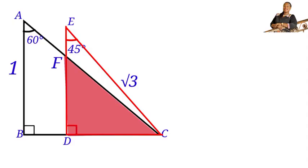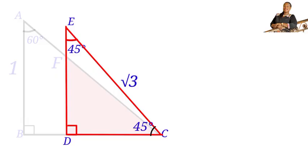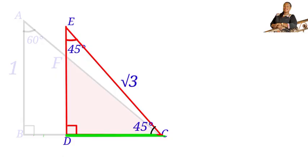Now let us solve. Focusing on triangle EDC: this angle is 90 degrees and this angle is 45 degrees, so the remaining angle will also be 45 degrees. Therefore, triangle EDC is an isosceles triangle, since both non-right angles are 45 degrees.